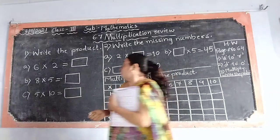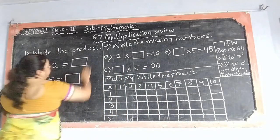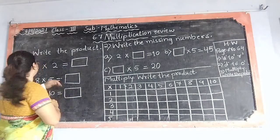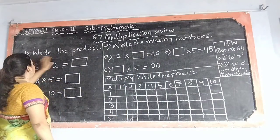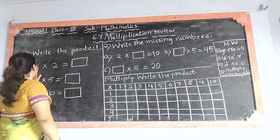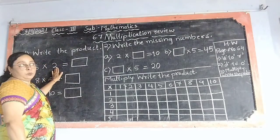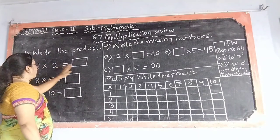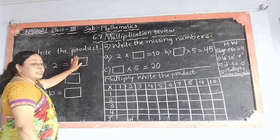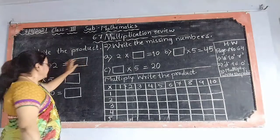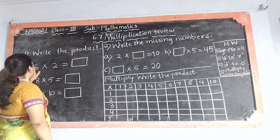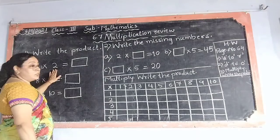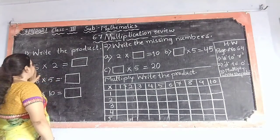Now see children, write the product. Here we have been given: write the product. 6 multiplied by 2. So what is the answer? What is the product? What we have to do is we have to read 2's table till 6.